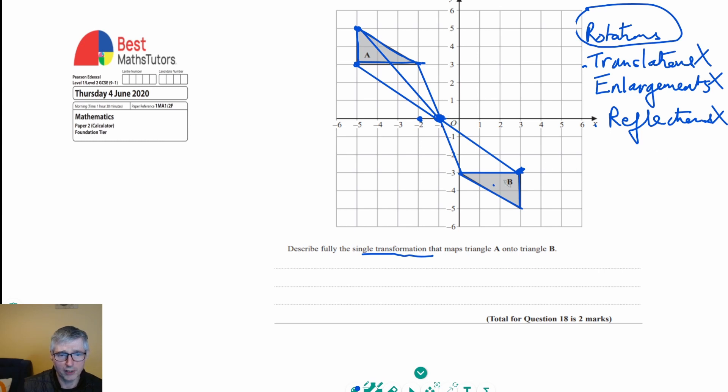So to describe the rotation completely, so we've got to fully describe this rotation, or this transformation rather. So we need to say, well, it is a rotation. So we need to describe what type it is. So it's a rotation, and we need to give the centre of the rotation.